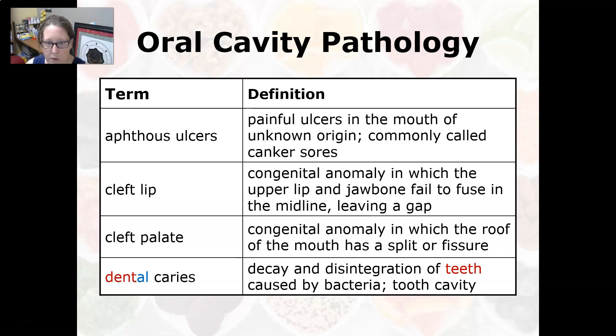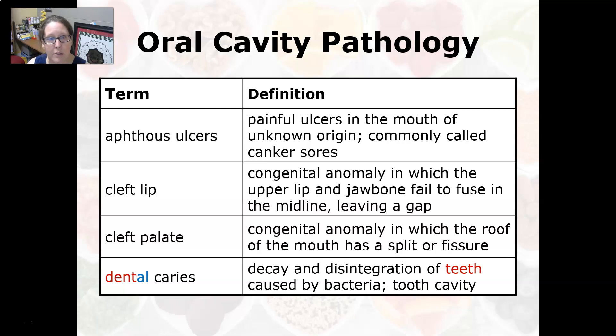An aphthous ulcer is a painful ulcer in the mouth of unknown origin. It is commonly called a canker sore. It's possible that it's caused by a virus.